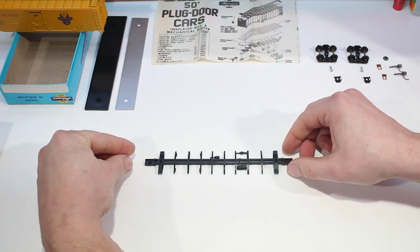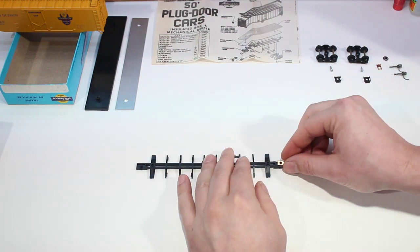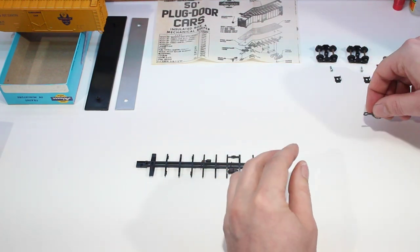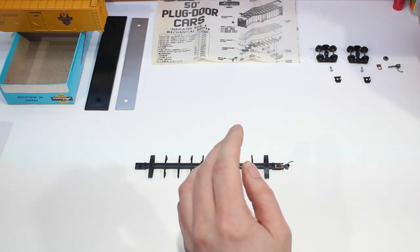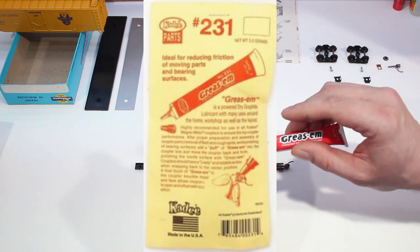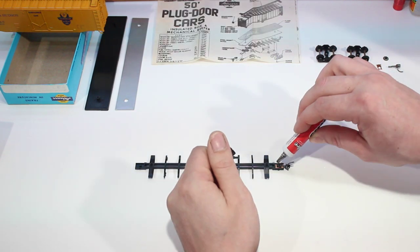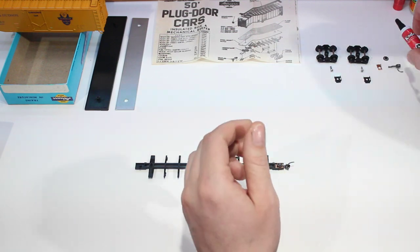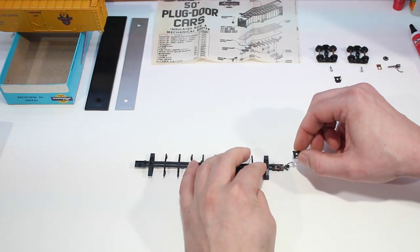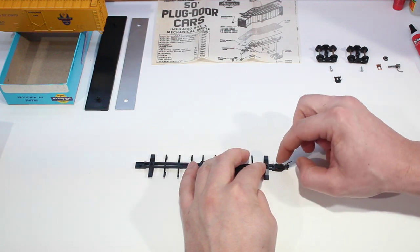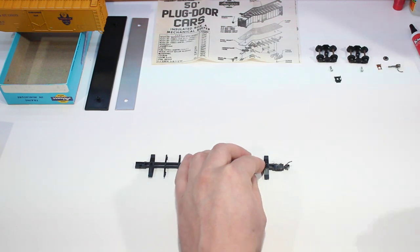After we've checked for flashing, the next thing we're going to do is put in our number five couplers. We're going to start off with the spring and then the coupler. Put a little bit of KD grease in there, just a little puff, and then the coupler cover should just pop right over top and clip down.